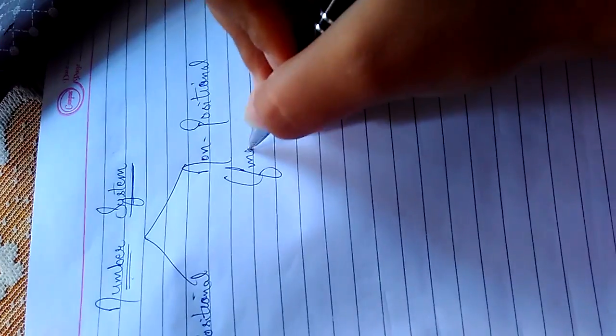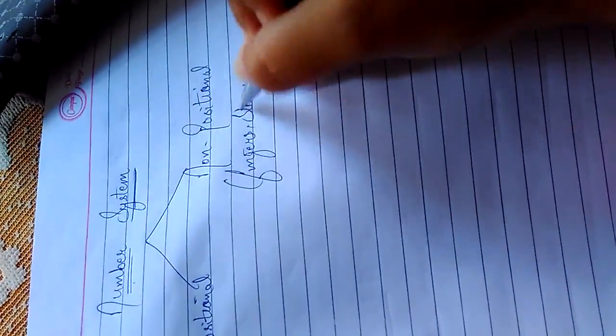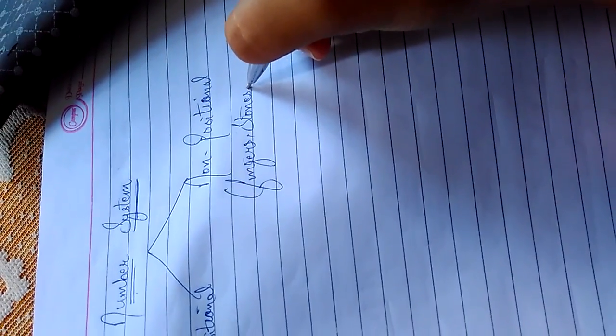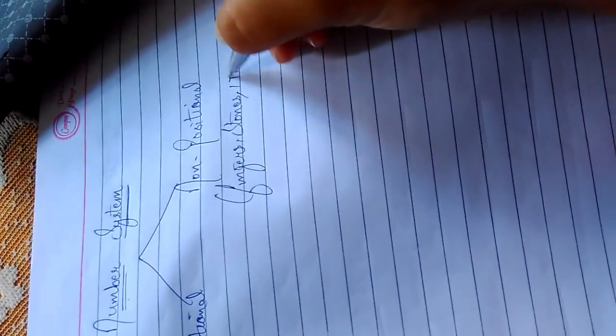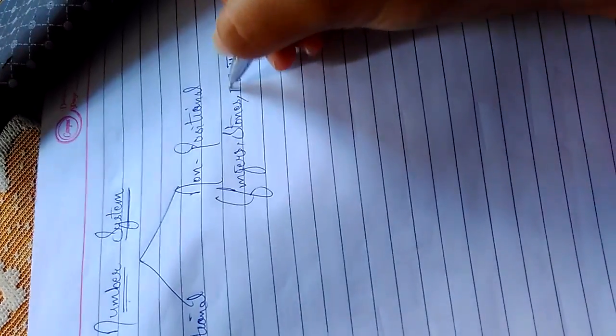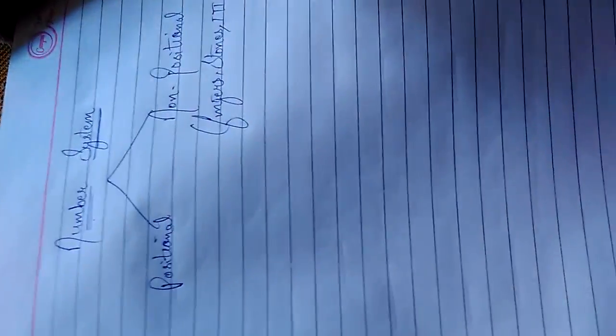Non-positional number systems include when we count on fingers, when we use stones, or when we use tally marks like first, second, third. These all are non-positional number systems.